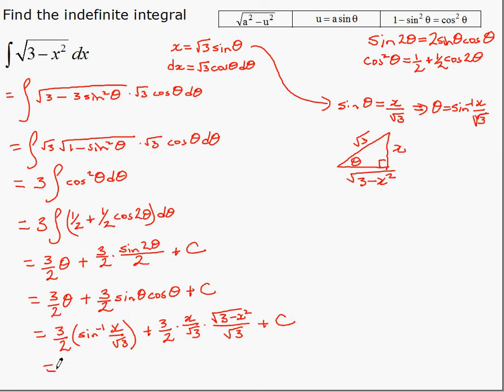And we can simplify just a little. Root 3 and root 3 is 3. And that cancels with this 3. So, we get 3 over 2 sine inverse of x over root 3, plus x over 2 times the root of 3 minus x squared, plus a constant.